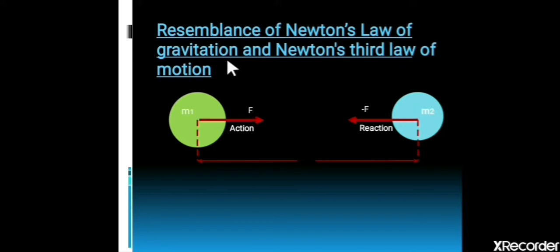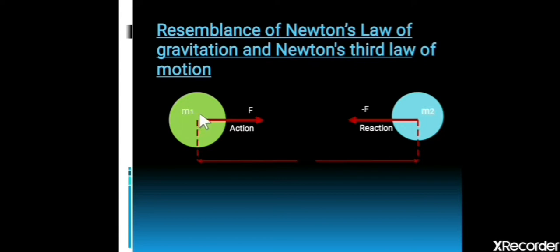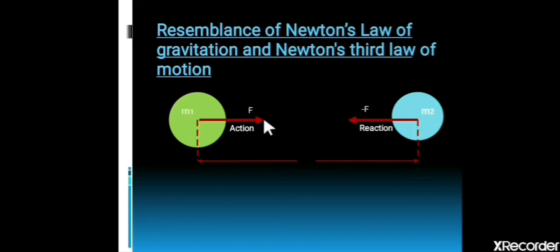Now we will discuss the resemblance of Newton's law of gravitation and Newton's third law of motion. Consider two objects of mass m1 and m2. According to Newton's law of gravitation, m1 attracts m2 with force F, and m2 also attracts m1 with a force of the same magnitude but in the opposite direction. If we consider the force on m1 as action and the force on m2 as reaction, then this action and reaction are equal in magnitude but opposite in direction — which is exactly what Newton's third law of motion states.